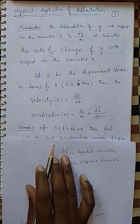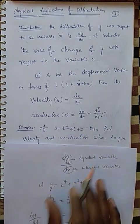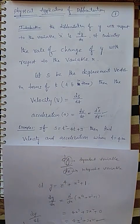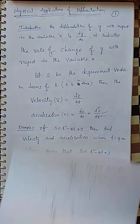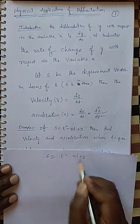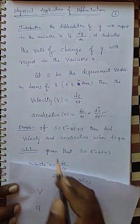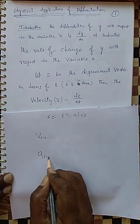Example: If s = t² − 4t + 3, find velocity and acceleration when t = 4. We have to understand the question carefully. First, write what is given and what we need to find. He has given s = t² − 4t + 3. We need to find velocity V and acceleration a at t = 4.